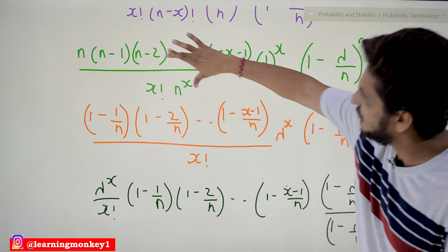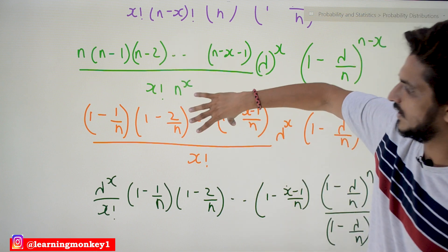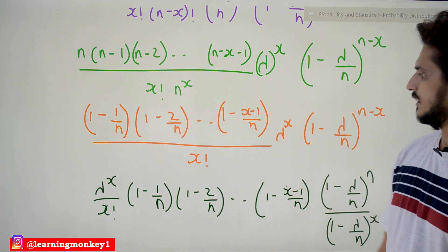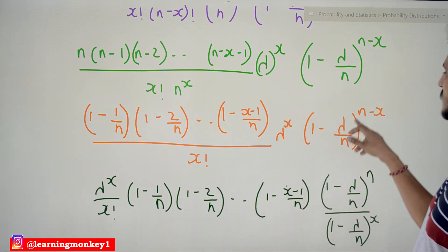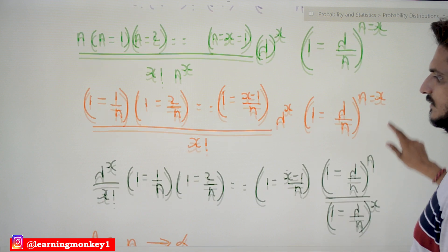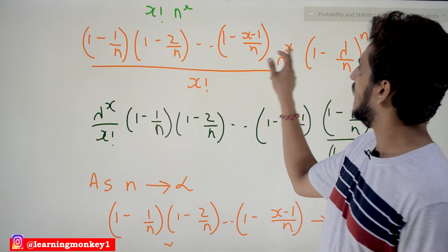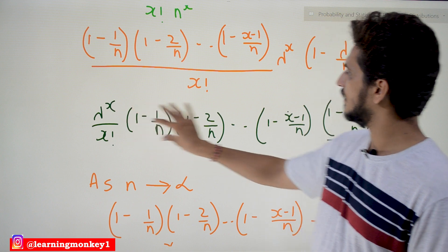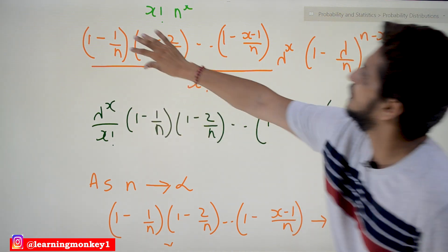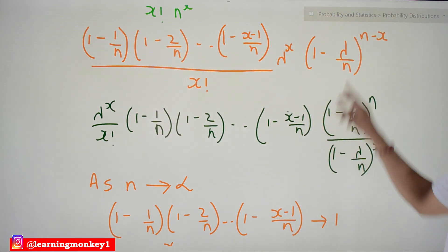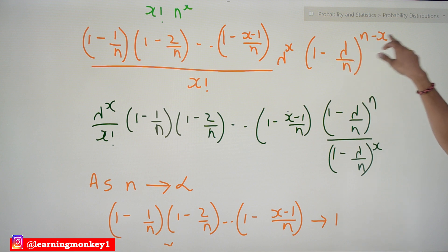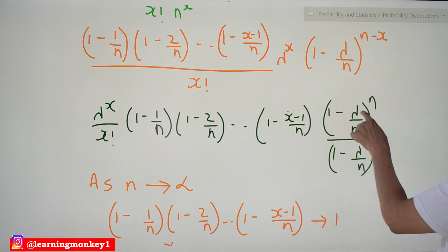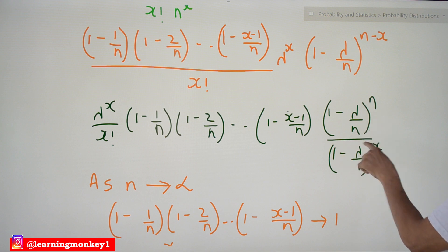Putting it together, those terms equal 1·(1−1/n)·(1−2/n)·…·(1−(x−1)/n), multiplied by (1−λ/n)^(n−x). We separate λ^x/x! out, and (1−λ/n)^(n−x) is rewritten as (1−λ/n)^n divided by (1−λ/n)^x.